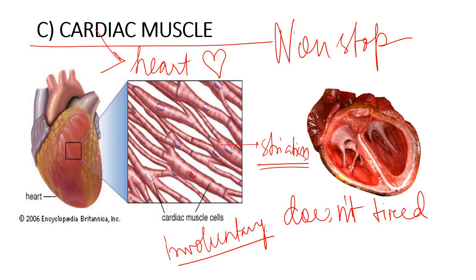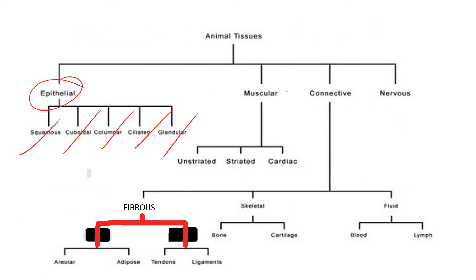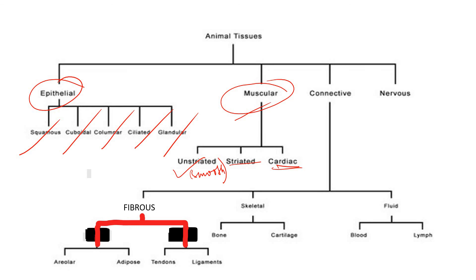To summarize: muscular tissues are of three types. Smooth or unstriated muscles are involuntary, found in internal organs. Striated muscles like biceps and triceps are voluntary and under our control. Cardiac muscles are in the heart, work non-stop, have striations, and are involuntary. This completes the second part of animal tissues — muscular tissues.